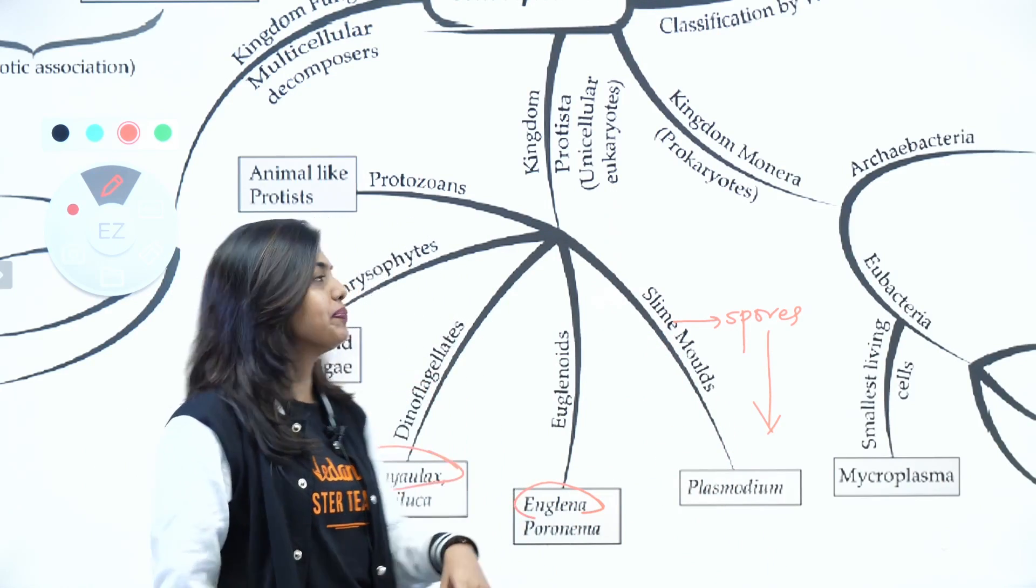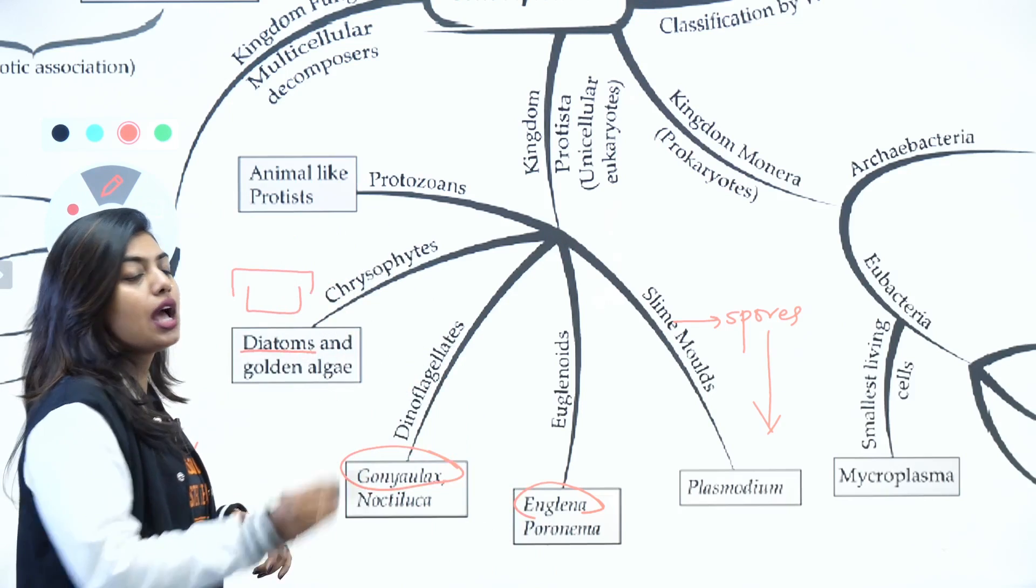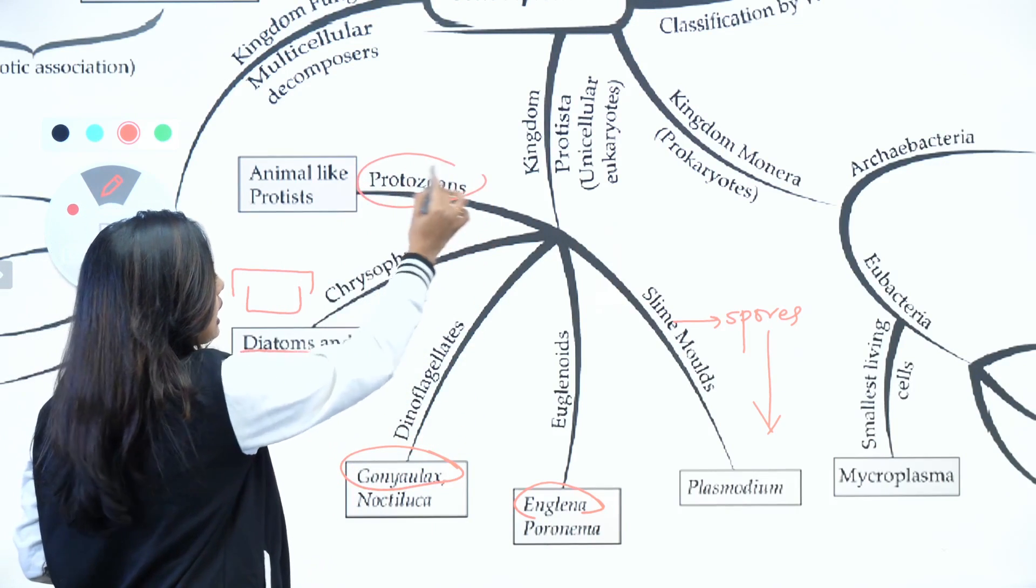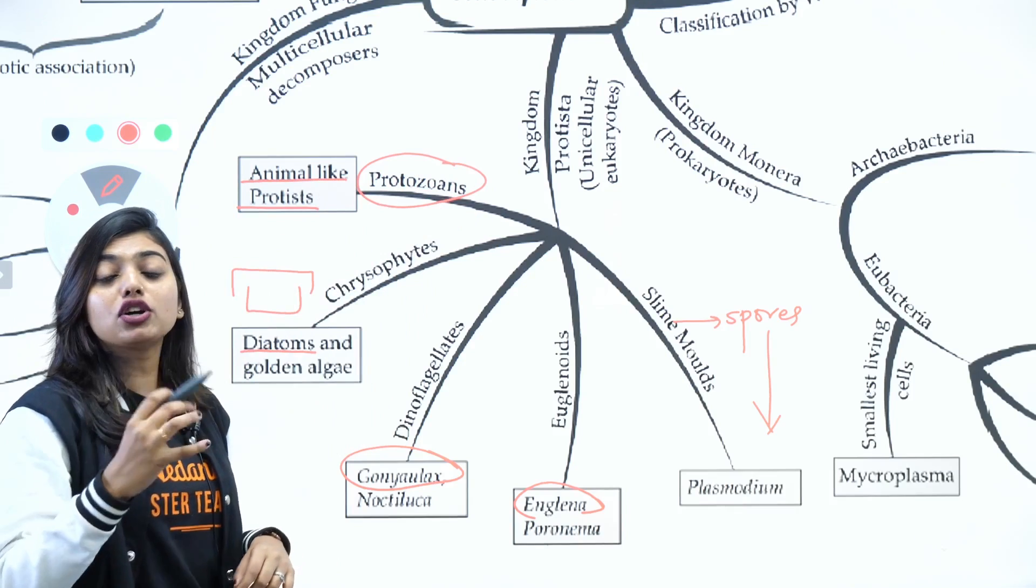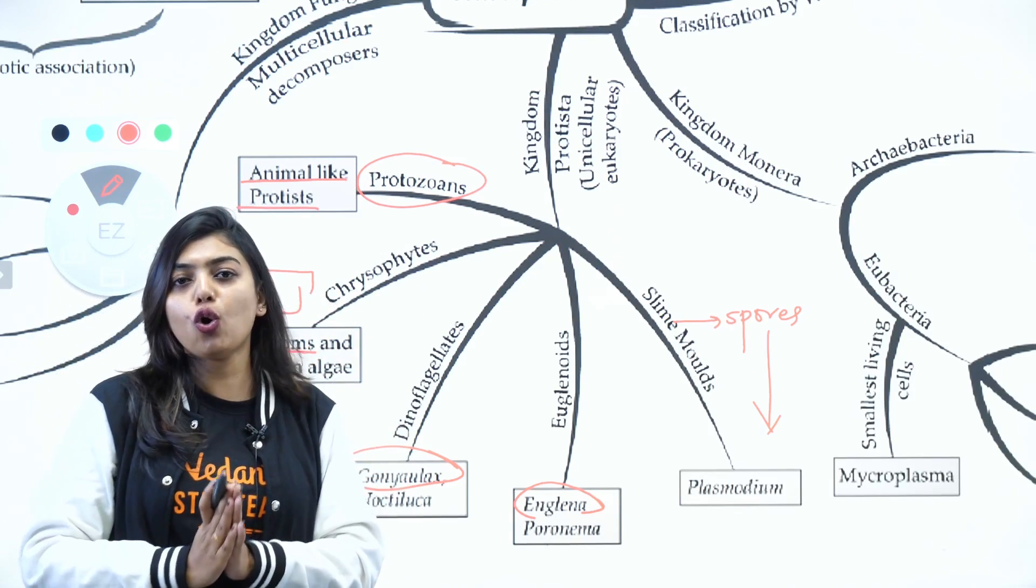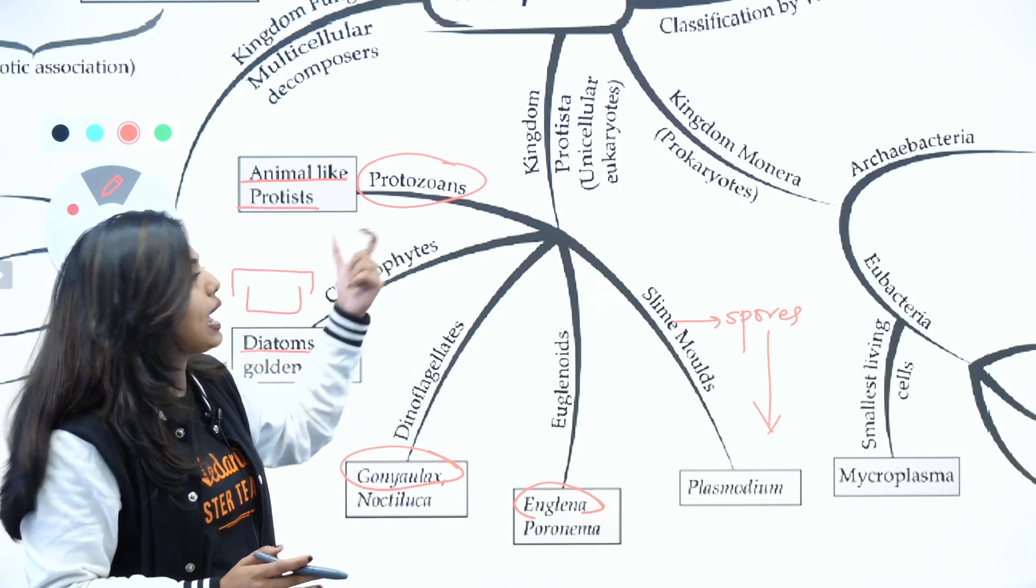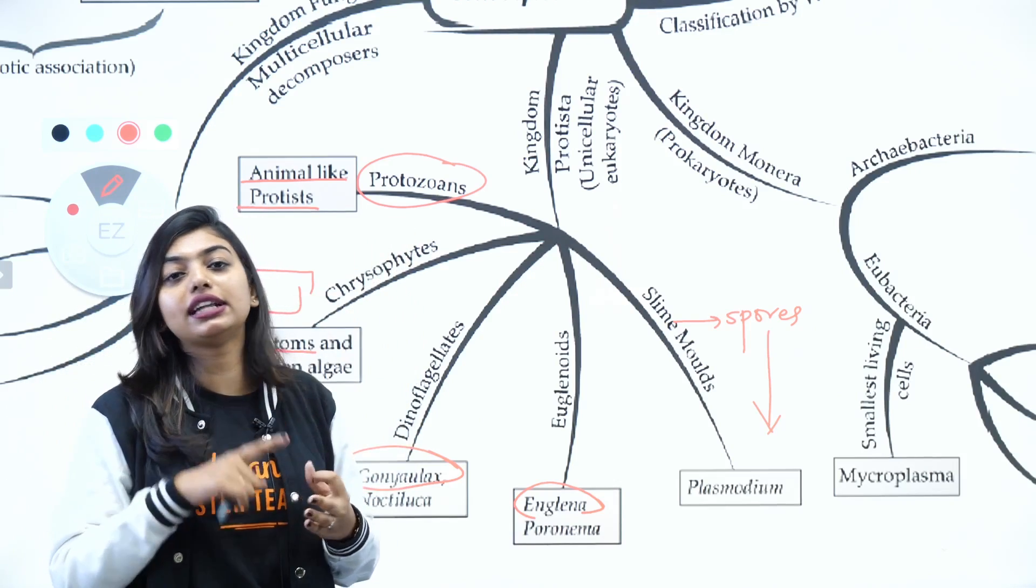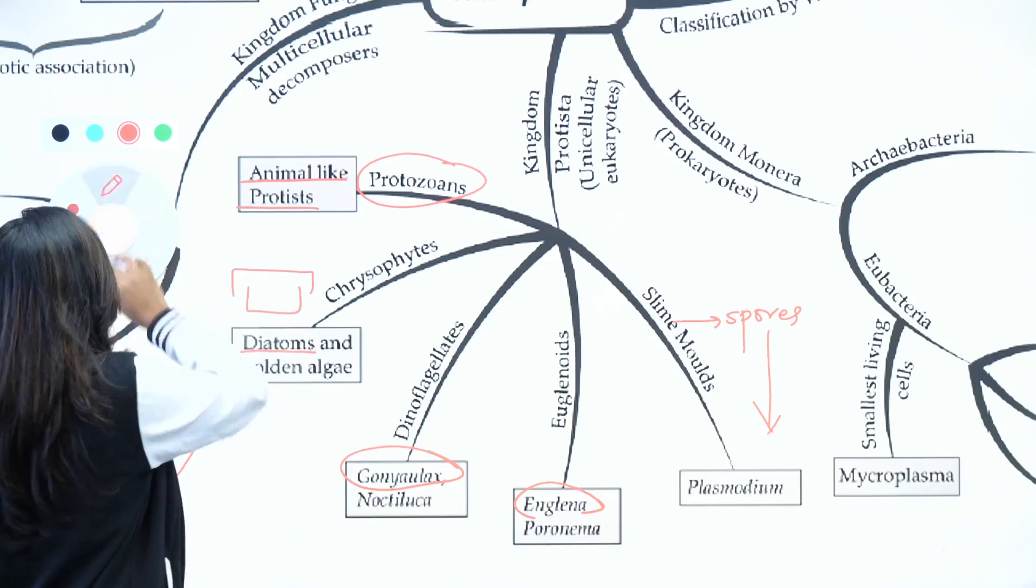Then when we come to protozoans, protozoans are categorized as animal-like, mainly because of the presence of flagella and cilia - that means they're capable of doing locomotion. That is the reason why they are called animal-like - that is your amoeboid, ciliated, and flagellated.